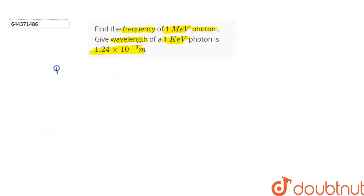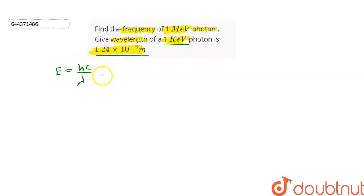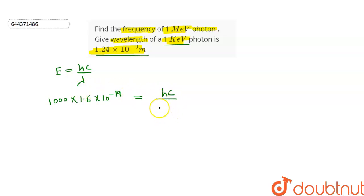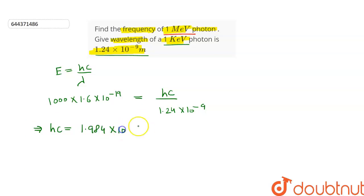Let's find out. We know that E = hc/λ. It is given that the wavelength of a 1 kilo electron volt photon is 1.24 × 10⁻⁹ meters. So we can write E, which is 1000 × 1.6 × 10⁻¹⁹, is equal to hc / (1.24 × 10⁻⁹). From here, hc = 1.984 × 10⁻²⁵. Let this be the first equation.